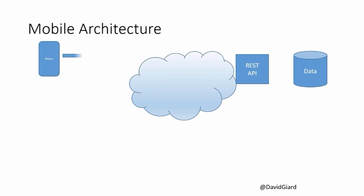A REST API is simply an API exposed through HTTP and JSON that updates some back-end resource like rows in a database table. That's what Mobile Services will do for you — it creates this REST API. Your application can then call that REST API to read or write data in that table. Basic CRUD stuff: Create, Read, Update, and Delete. That's just what Azure Mobile Services does right out of the box.